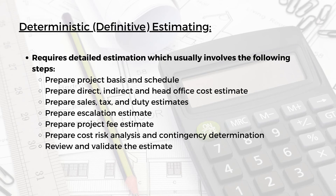For the deterministic or definitive estimate — class 1 or class 2 — detailed estimation is required, involving the following steps: preparing the project basis and schedule; preparing direct, indirect, and head office cost estimates; preparing sales tax and duty estimates; preparing escalation estimates, project fee estimates, and cost risk analysis with contingency determination; and finally reviewing and validating your estimates. Most videos on Cost Engineering Professional relate to deterministic estimation methodologies. Thank you for watching — if you enjoyed the video, like it, subscribe to the channel, and I'll see you in the next video.